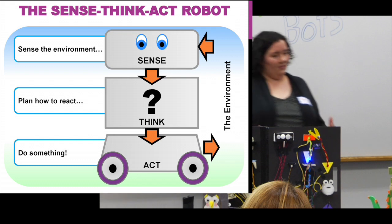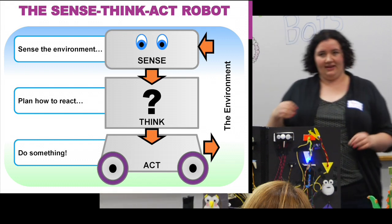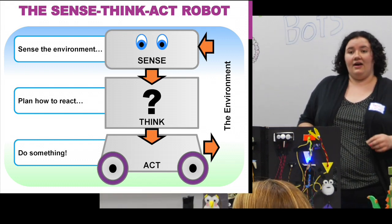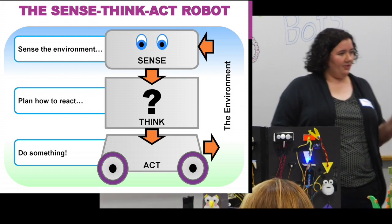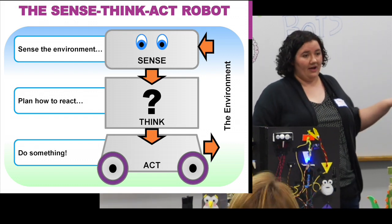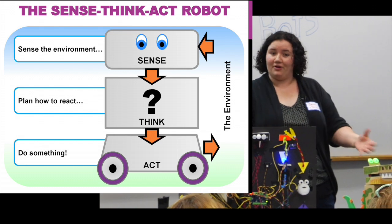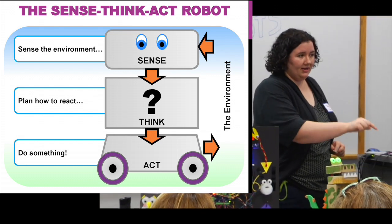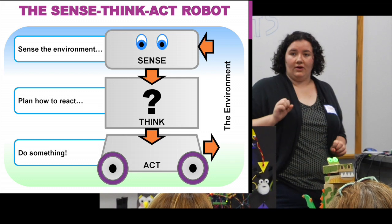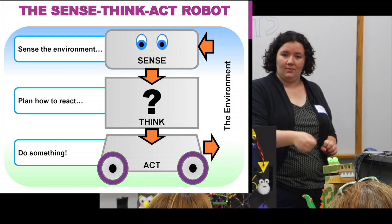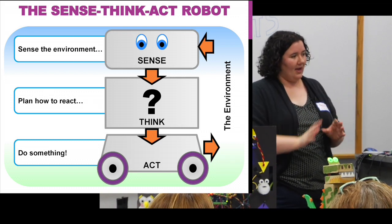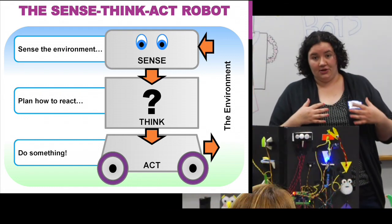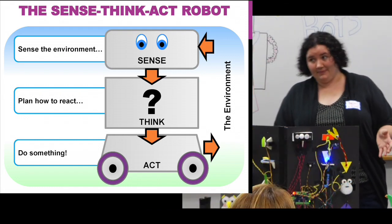A robot normally has three components. They can sense the world around them — the environment. The environment for a robot can either be the world around us or yourself. So if you're pushing a button or twisting a knob or in some way interacting or touching the robot, that still counts as sensing because it's sensing you. You're part of the robot's environment.